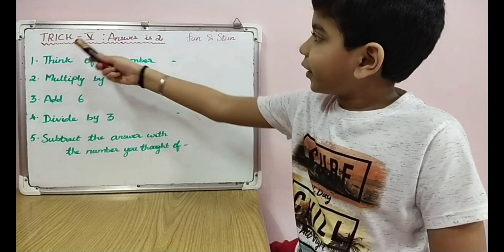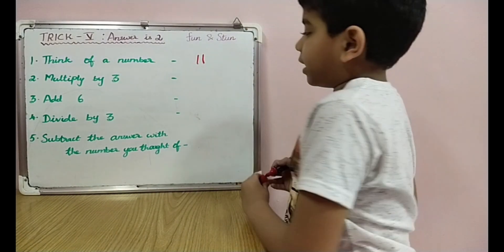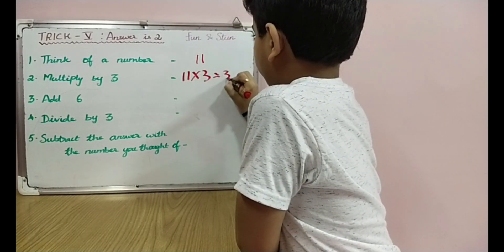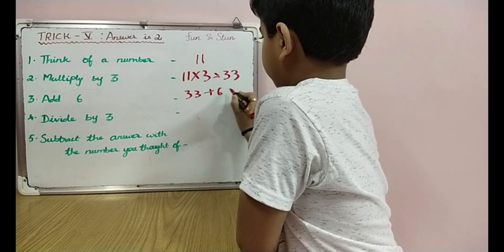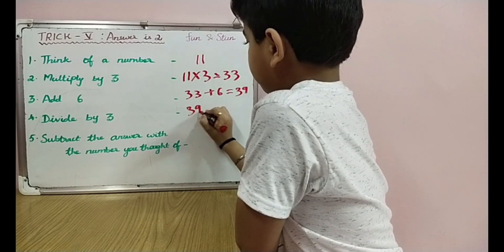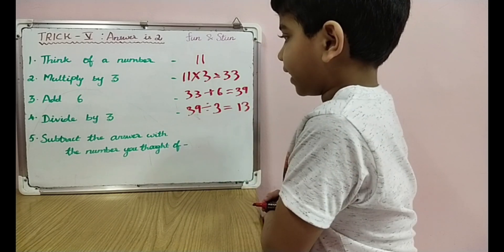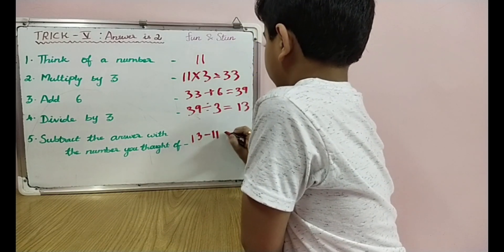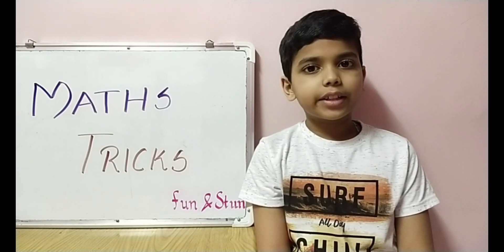Trick 5 — the answer is 2. Think of a number; I'm going to choose 11. Multiply by 3: 11 times 3 is equal to 33. Add 6: 33 plus 6 is equal to 39. Divide by 3: 39 divided by 3 is equal to 13. Subtract the answer with the number you thought of: 13 minus 11 is equal to 2. Share these tricks with your friends and prove yourself a genius!